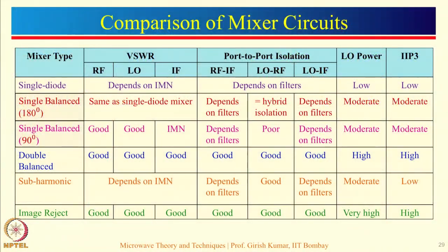Here is a comparison chart between various mixer circuits. We have mixer types: single diode, single balanced using 180 and 90 degree couplers, double balanced mixer, sub-harmonic, and image reject. We are going to compare all these mixer circuit types based on VSWR, port-to-port isolation — which is very important — LO power required to drive the mixing devices, and IIP3, which indicates the linearity of the mixer. VSWR represents the reflections seen at the three ports: the RF port, the LO port, and the IF port.